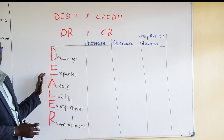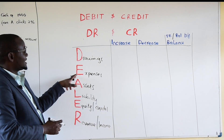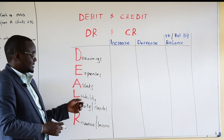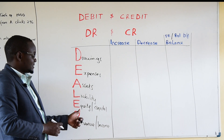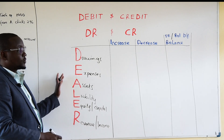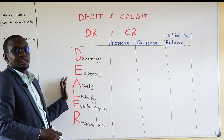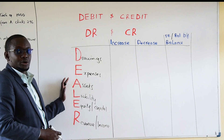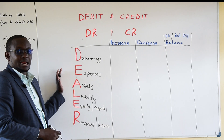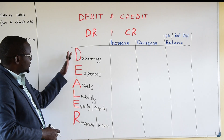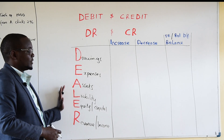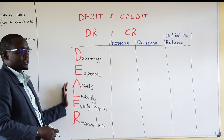In our previous video we discussed what are expenses, what are drawings, what are assets, what are liabilities, what is capital, and what is income. You can look at that video on our channel — the video on elements of financial statements, all elements of the income statement and balance sheet — where you shall see examples of all these categories.